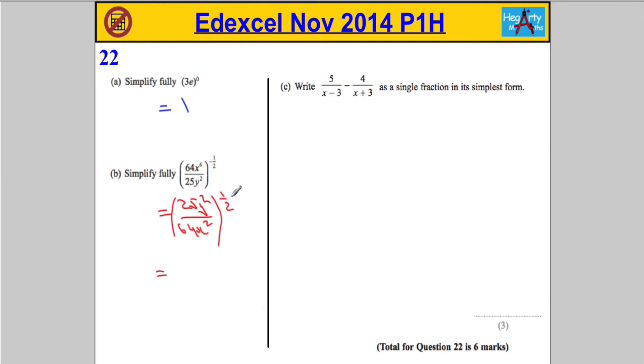Okay, now the next thing we need to realize is that the half, the power of a half, is acting on the numerator and the denominator. So, 25 to the power of a half is the same as the square root of 25, which is 5. Y squared to the power of a half, you would times the powers here, and 2 times a half is 1, so we get y to the power of 1. I'm just going to leave that as y.